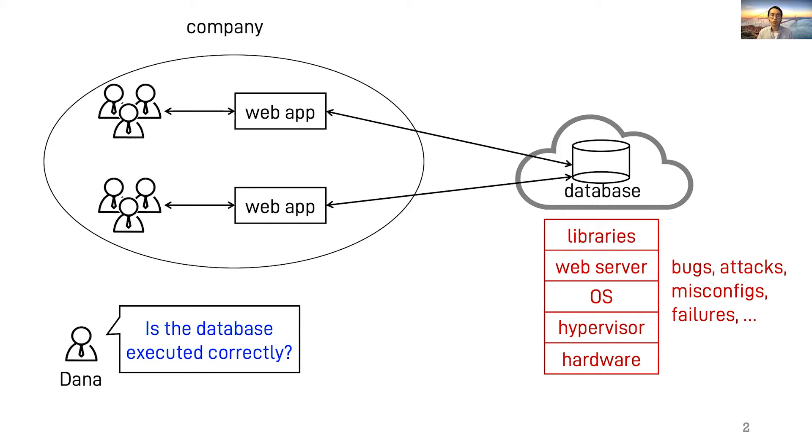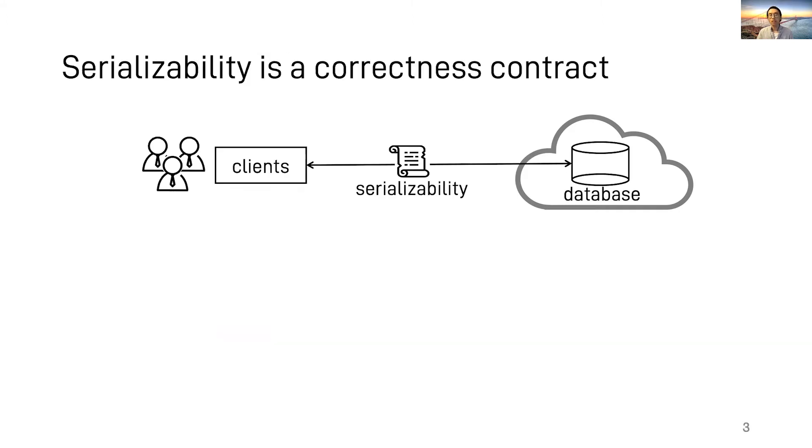First, we need to define correctness. A natural answer is serializability, a contract between databases and their clients.